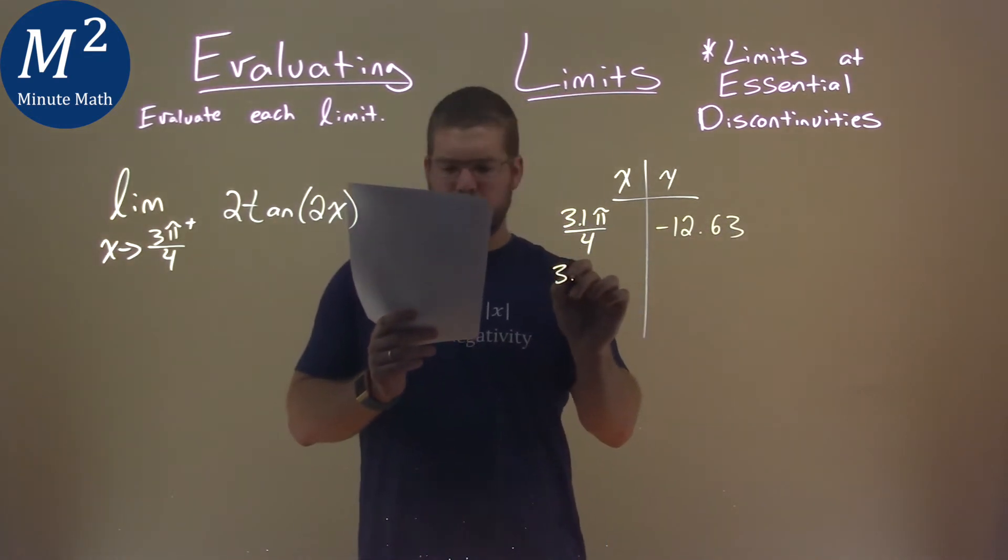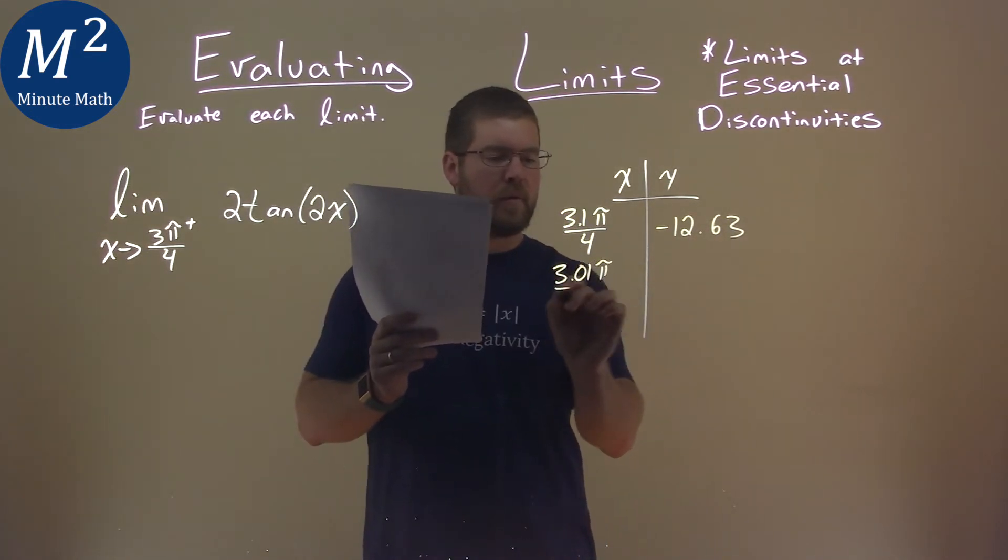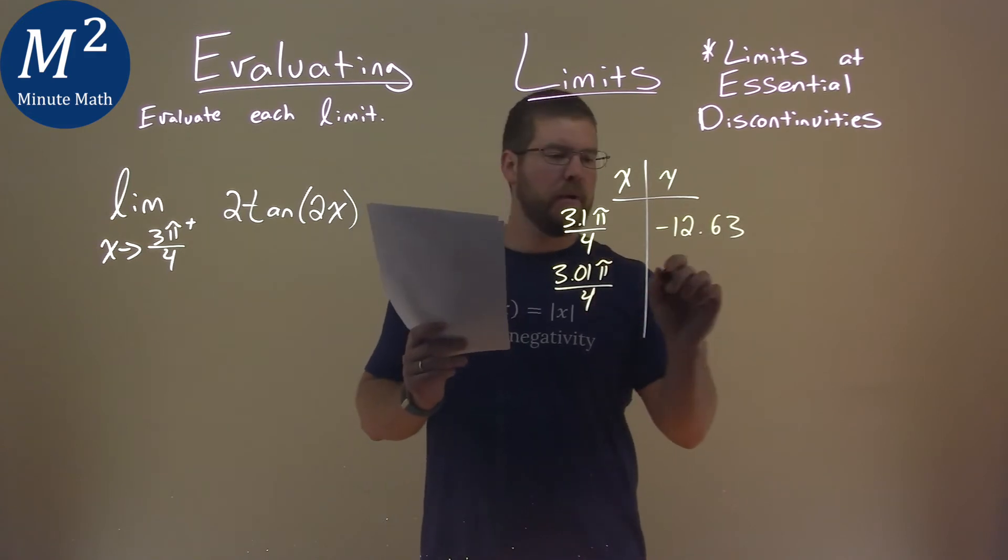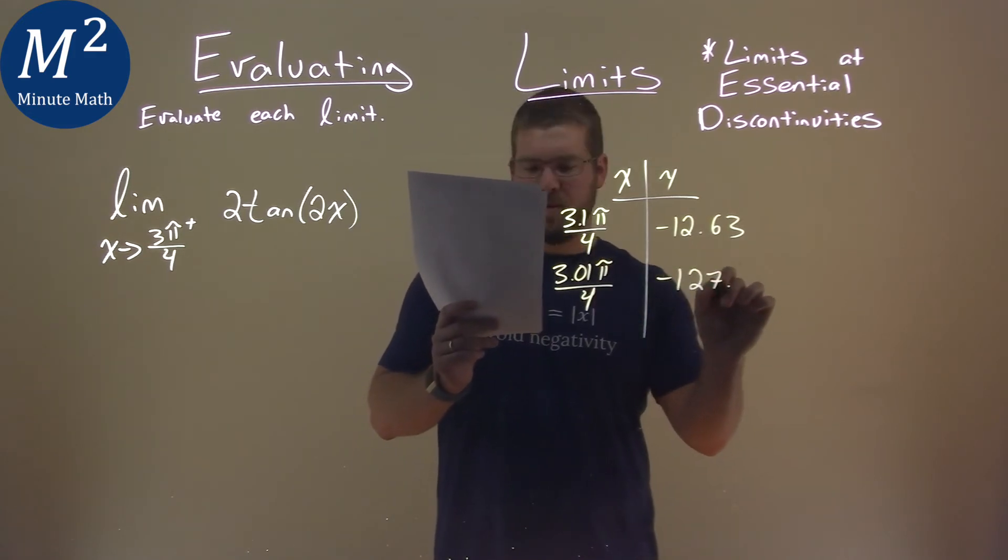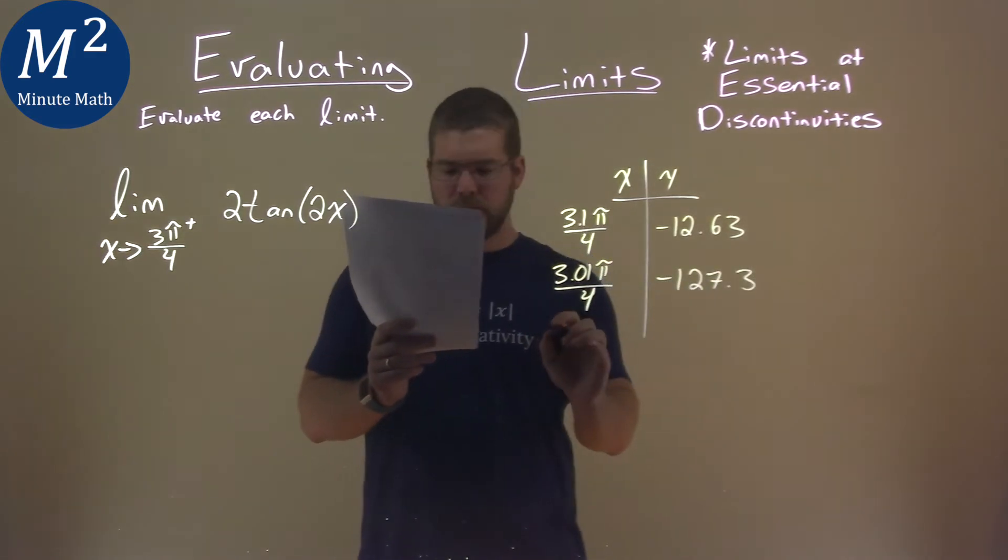Well, what happens at 3.01π/4? We get negative 127.3, and let's keep going.